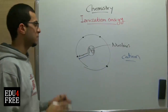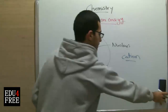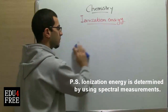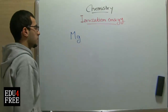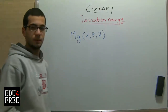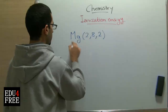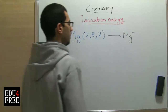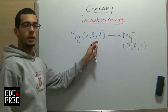An ion with a positive charge means that it is an atom that lost an electron. For example, the magnesium atom contains 12 electrons. In order to convert this magnesium atom into a positive ion, its electronic configuration will be 2, 8, 1 — because it lost 1 electron.